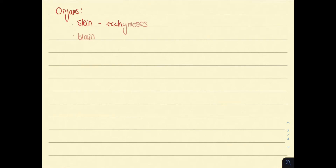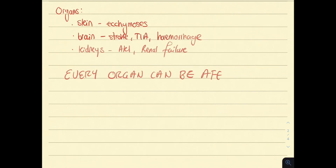The three important organs involved are the skin — where you can see bruising and ecchymosis — the brain, where patients can present with stroke, TIA, or hemorrhage, and the kidneys, where patients can present with AKI or renal failure. But don't forget, every single organ can be affected.